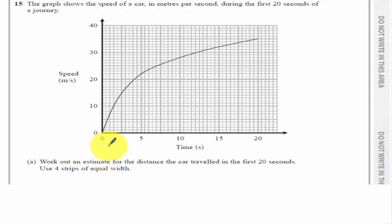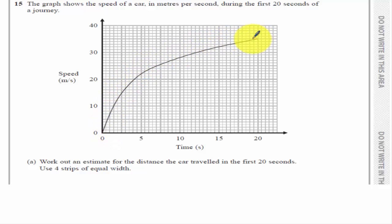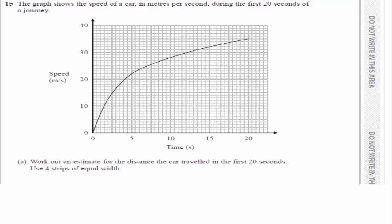One of the facts of knowledge you need before you go into the exam is that on a speed-time graph, the area underneath the graph represents distance. You can work that out in the exam, but it is far easier just to go in knowing that. And we're going to use four strips of equal width.